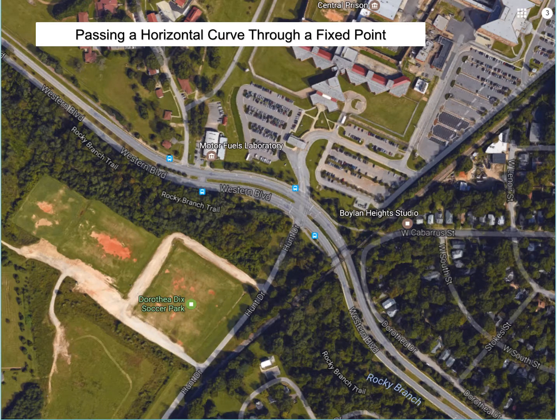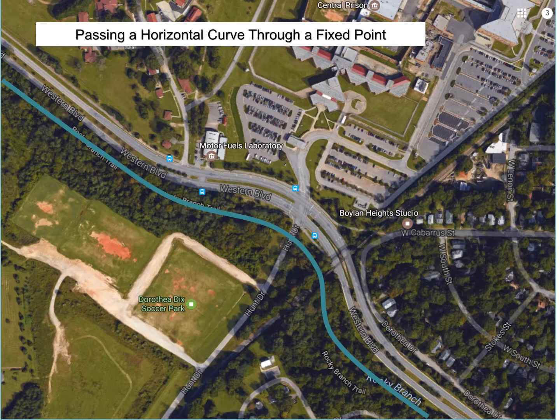There may be instances in a horizontal alignment that you need to pass a horizontal curve through a fixed point. This is an example of that type of instance, starting with some of the features that were existing before the road and affected the overall selection of the alignment.